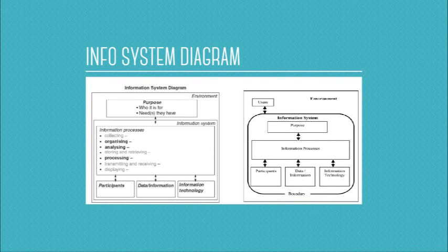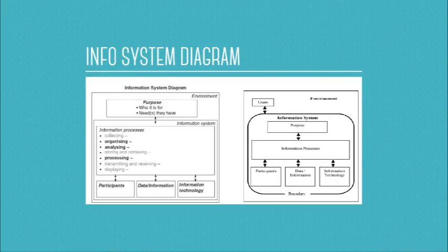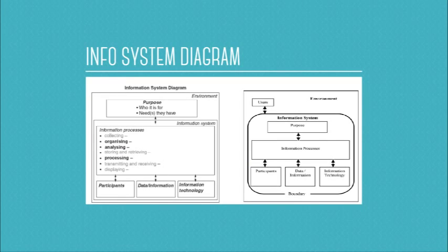You would have seen this diagram regularly during your preliminary course, and in some recent HSC exams the markers have gone back to these diagrams. In an exam a couple of years ago, most questions were related to these diagrams. So it's important that we go back to our preliminary course material and have a look. You would have seen these diagrams with the information processes listed: Collecting, Organising, Analysing, Storing and Retrieving, etc. You may have had an acronym for that - 'Come On All Students, Pat The Dog' - there are many of them. Just go back to your preliminary course and have a look over those information system diagrams.